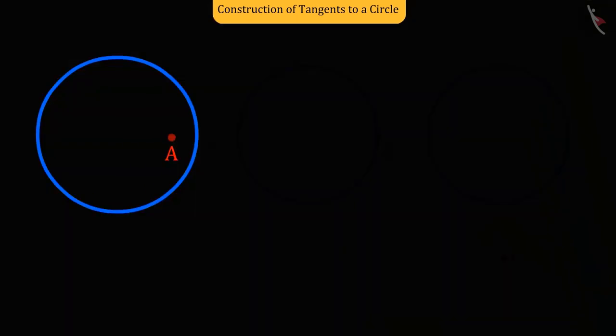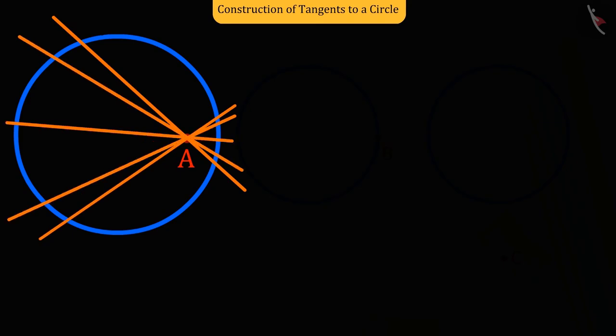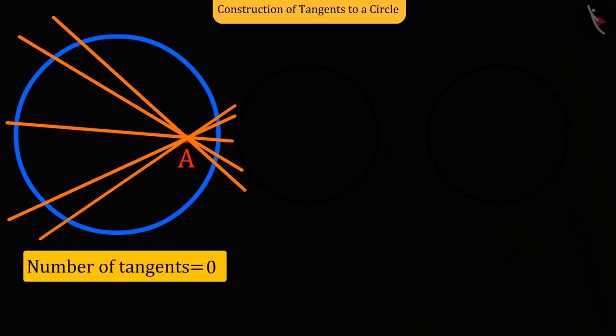Here, in this case, the point is inside the circle. As we have seen in the previous lesson, from a point inside the circle, the tangent line cannot be drawn on the circle. So the number of tangents here will be zero.